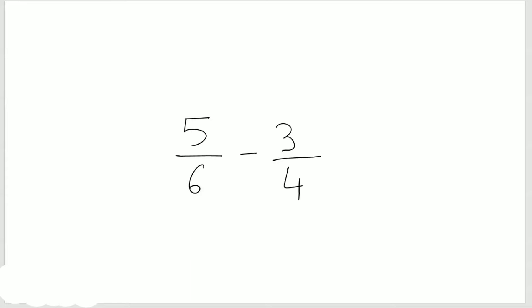Now here we have an example: 5 over 6 minus 3 over 4. So the denominator is 6 for the first fraction and 4 for the second fraction.